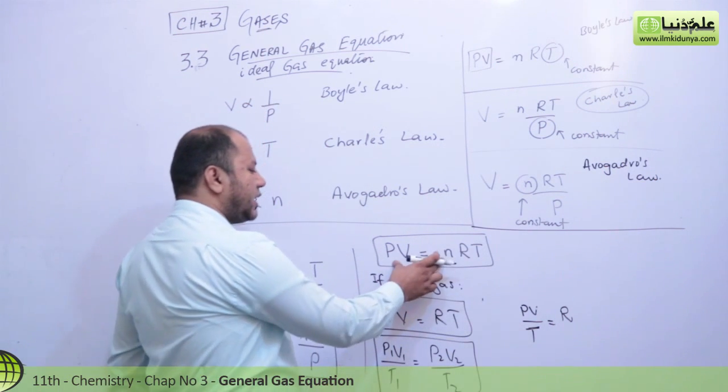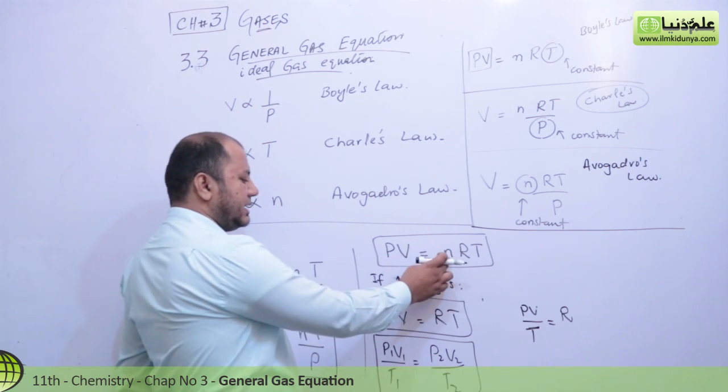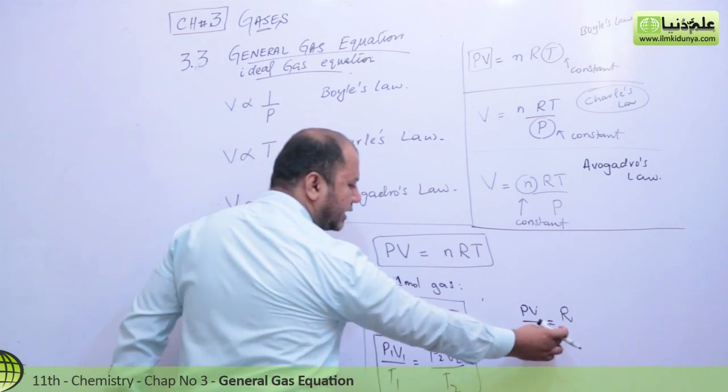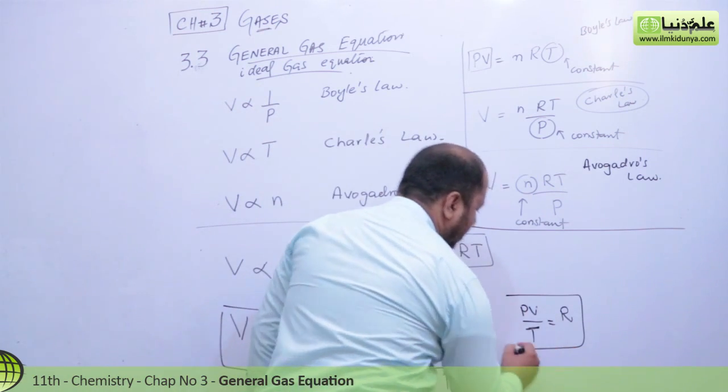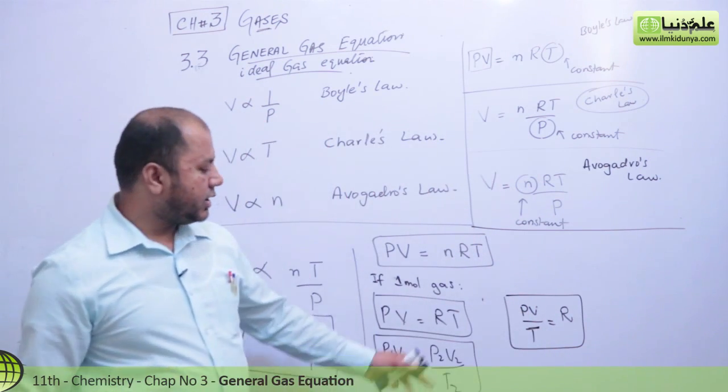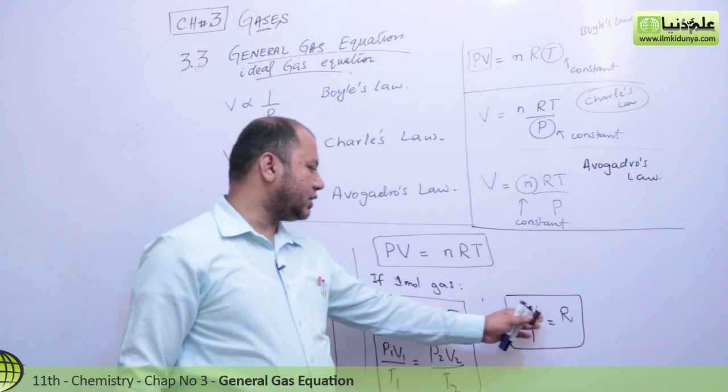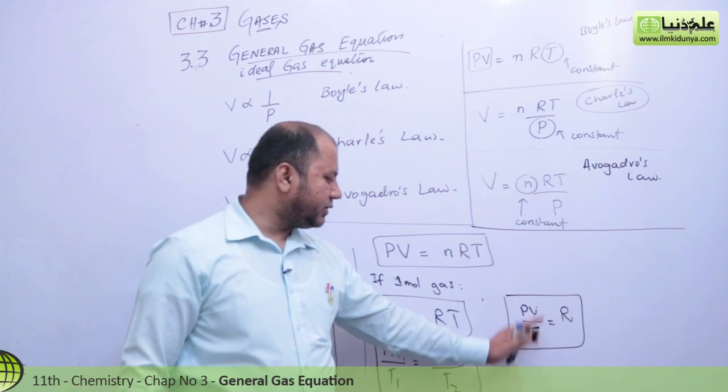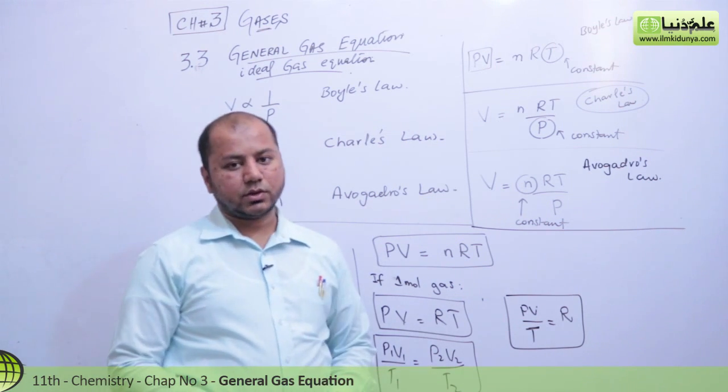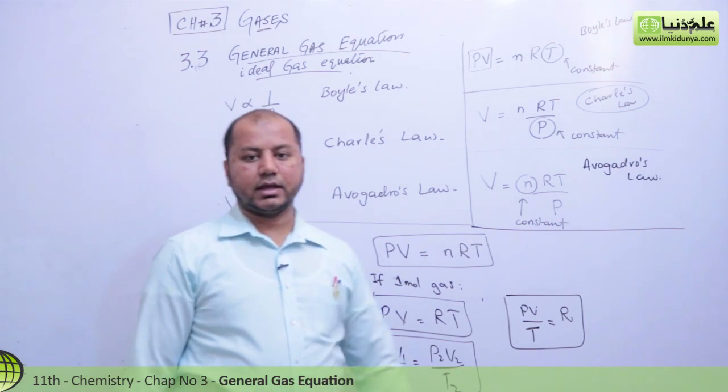One more thing I added: if you have the general gas equation and you take one mole of gas, then this equation will form. You can derive it in this form, in the ratio of product of PV over T. From this relation, the constant value is determined, so you can compare two cylinders and write the general gas equation in this form as well.